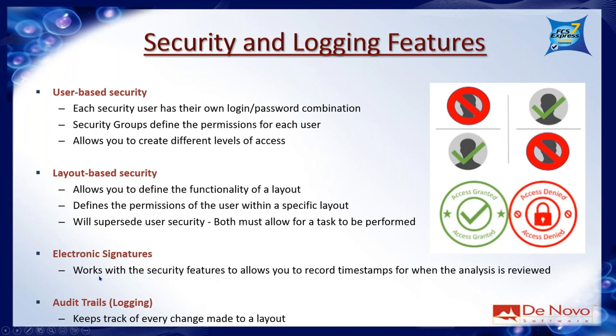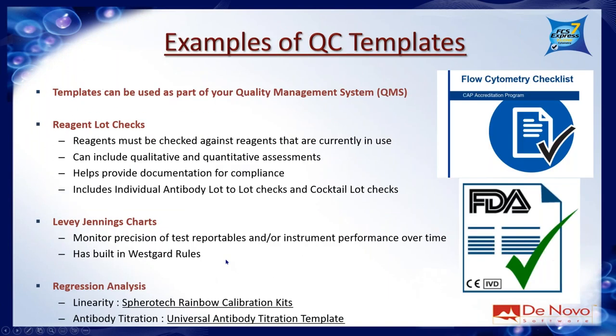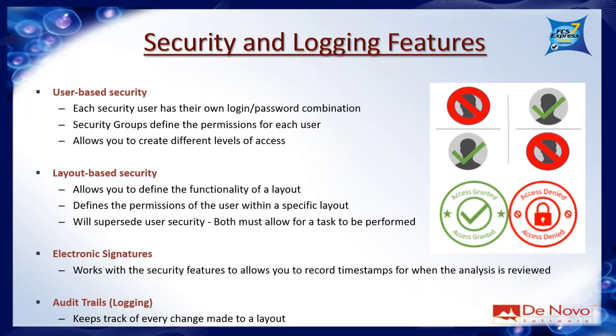Within security, we have the ability to add electronic signatures, which works with those security features to record timestamps for when the analysis is reviewed or signed off. For audit trails, you have the ability to keep track of every change made to a layout from when it's opened to when it's saved. This includes moving a gate, changing quadrants, or electronically signing. It documents what the change was, which user made it, and the date and time. If you move a gate, it tells you exactly which plot, where it was moved to, and what was changed.